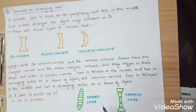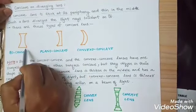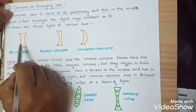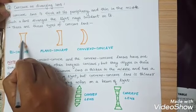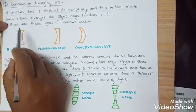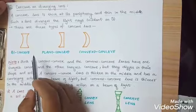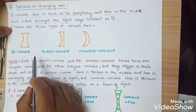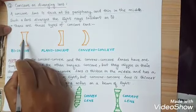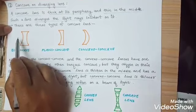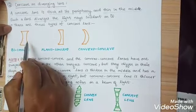Another type of lens is the concave lens. Concave lens is thick at the periphery but thin at the middle. This concave lens is otherwise known as diverging lens, because the lens diverges the light rays which are incident on it.